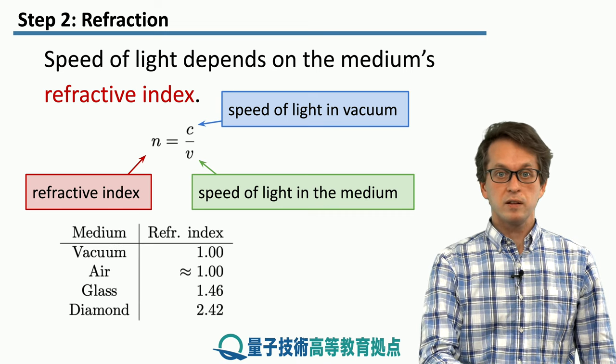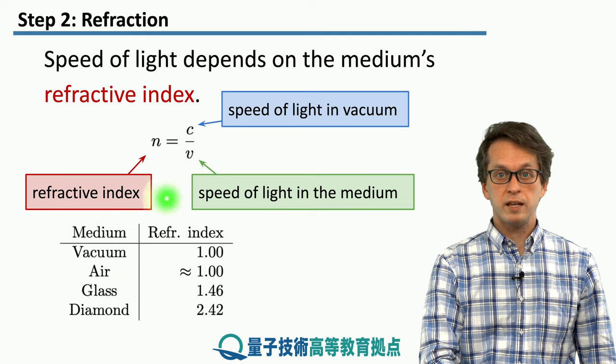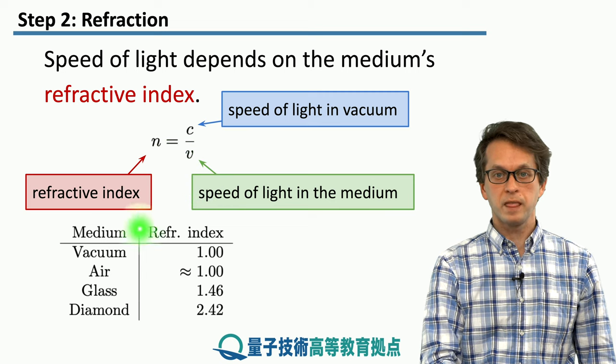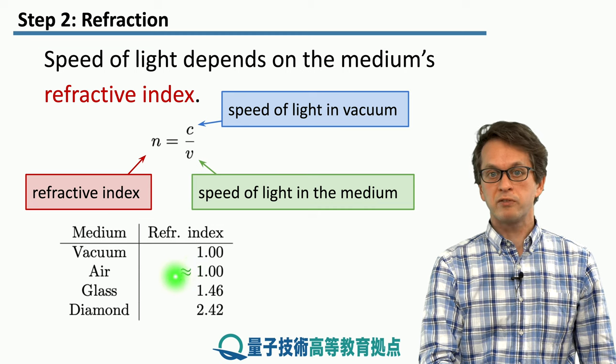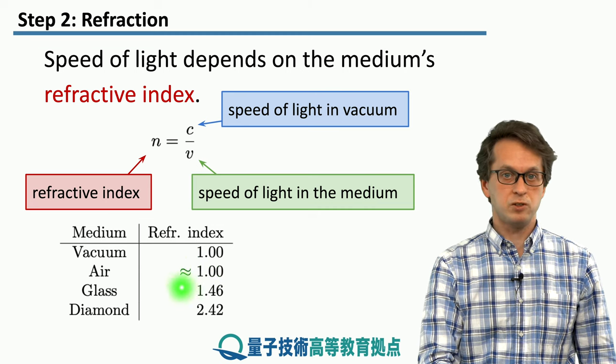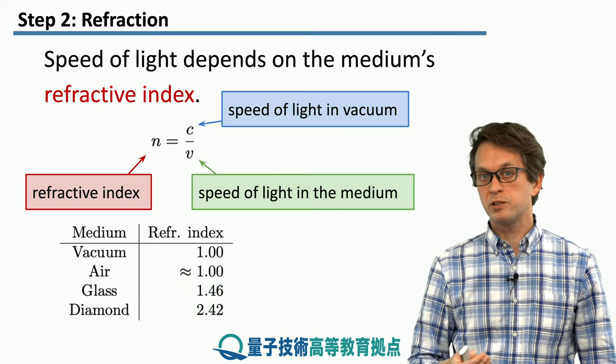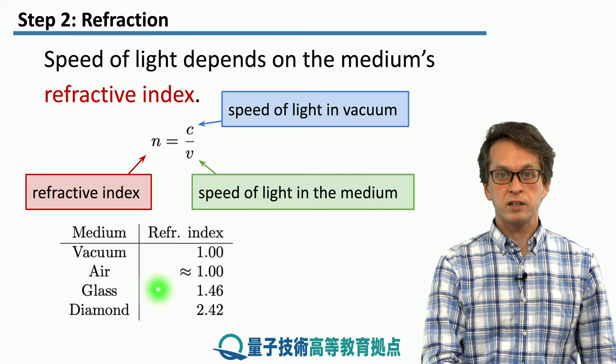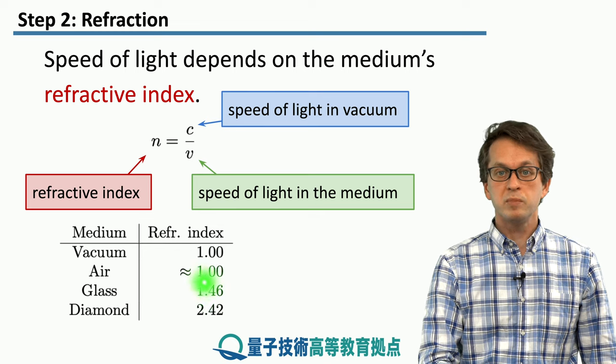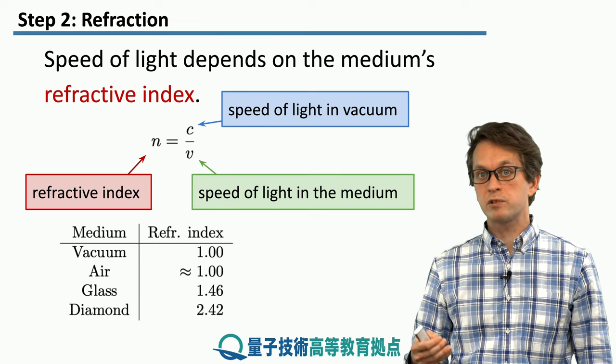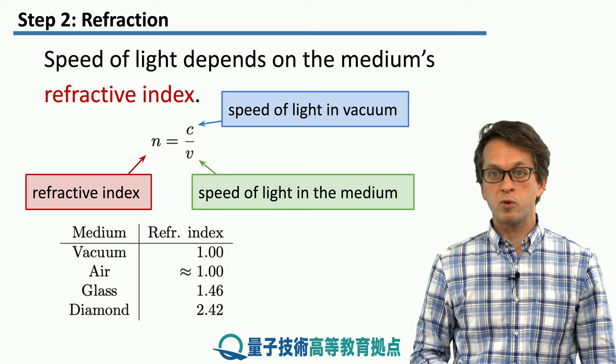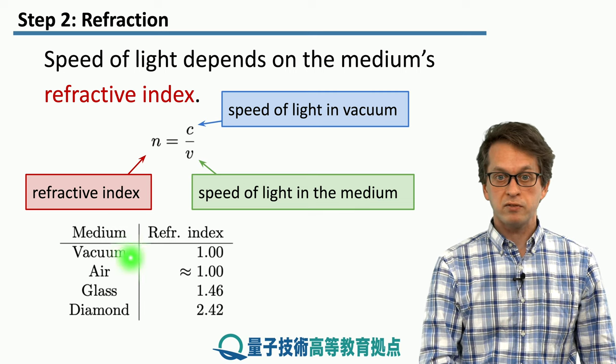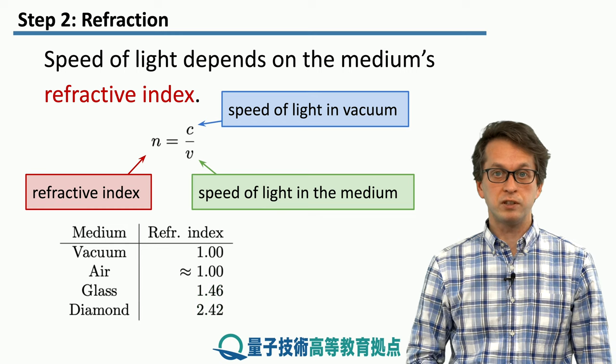For example, the refractive index of vacuum is just 1. Why? Because in vacuum, light travels with the same speed c, so c over c equals 1. Air has a slightly larger refractive index, but for our purposes, it's basically just 1. So the speed of light does not change very much. It slows down a little bit, but a very small amount. Glass, on the other hand, has a refractive index of 1.46. So it means that light travels 1.46 times slower in glass than compared with the speed of light in vacuum. And in diamond, it travels even slower by a factor of 2.42, which is the refractive index of diamond.